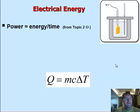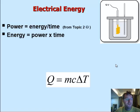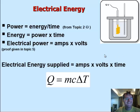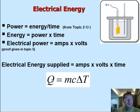I've got to remember that power equals energy divided by time from topic 2, and energy equals therefore power times time, and electrical power equals amps times volts. So what I can do is work out that the electric energy supplied is going to be the amps times the volts times the time, so that's going to be giving me a value for Q.